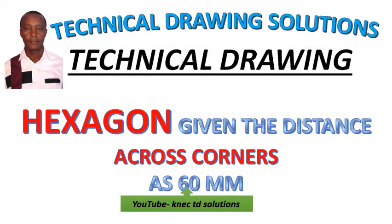Hello and welcome to Technical Drawing Solution by Dienkmao. Today I'm going to take you through drawing a hexagon given the distance across corners. The distance given is 60 millimeters.